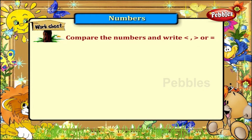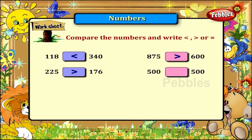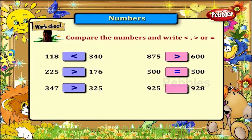Compare the numbers and write less than, greater than, or equal to in the box. 118 is less than 340. 875 is greater than 600. 225 is greater than 176. 500 is equal to 500. 347 is greater than 325. 925 is less than 928.